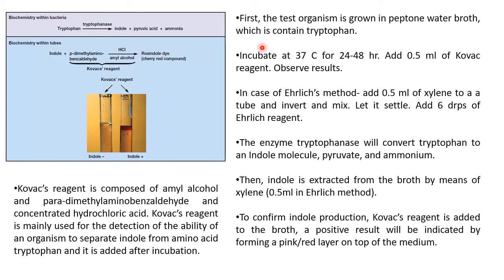For the procedure: the test organism is grown in peptone water broth containing tryptophan, then incubated at 37°C for 24 to 48 hours. Then we add 0.5 ml of Kovacs reagent and observe the results. In the Ehrlich method, we first add 0.5 ml of xylene to the tube, invert and mix it, and let it settle, then add six drops of Ehrlich reagent. The tryptophanase enzyme converts tryptophan to indole, pyruvic acid, and ammonia. The indole is extracted from the broth by the xylene. With Kovacs reagent, you directly get the result without needing to add xylene.